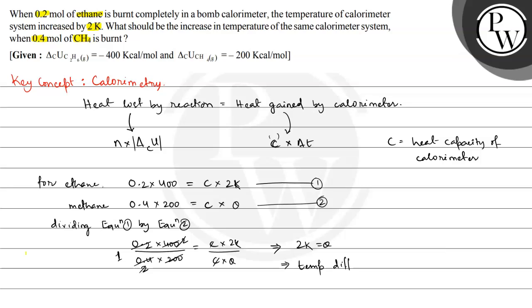Temperature difference is equal to 2 Kelvin. So 0.4 moles of methane on combustion will increase the temperature of calorimeter by 2 Kelvin. This is the required answer and I hope you understood the concept well. Best of luck. Thank you.